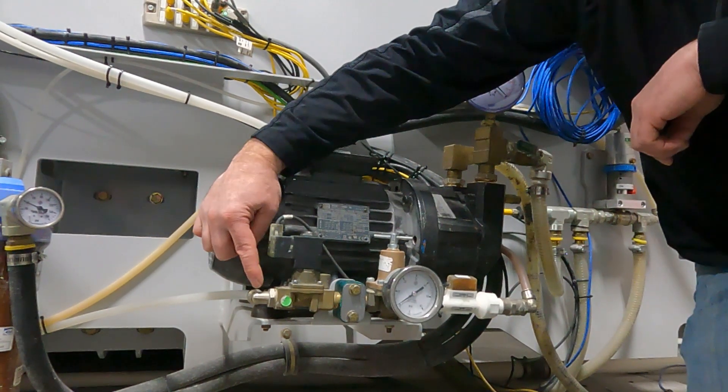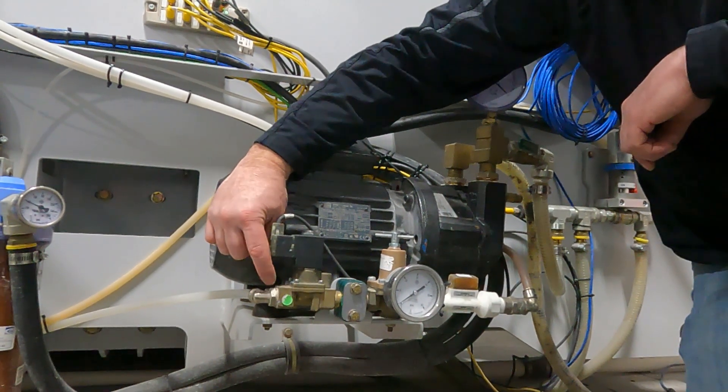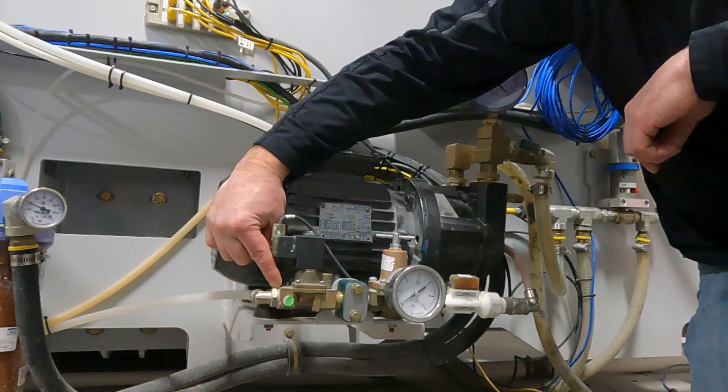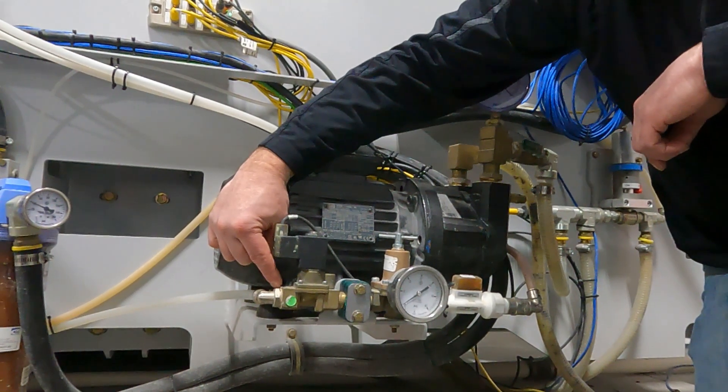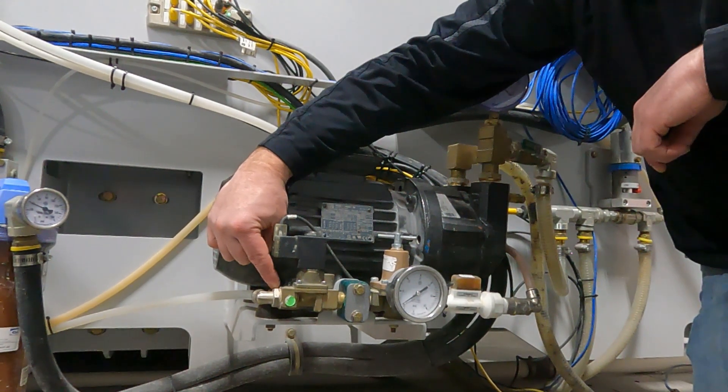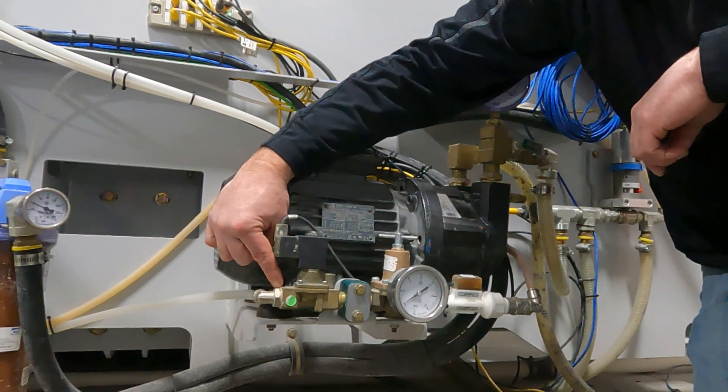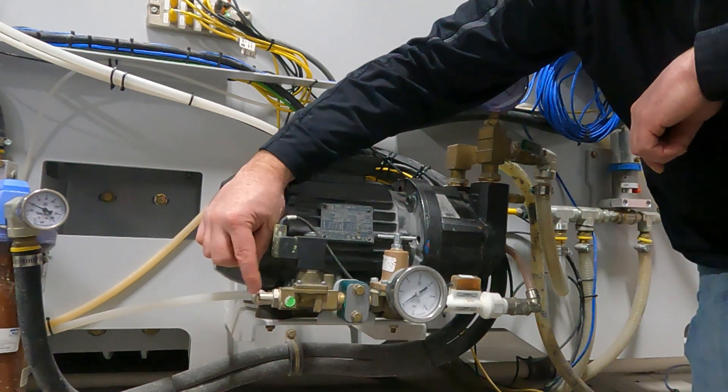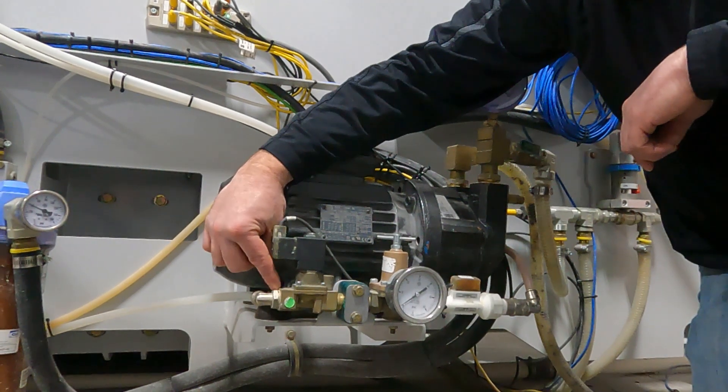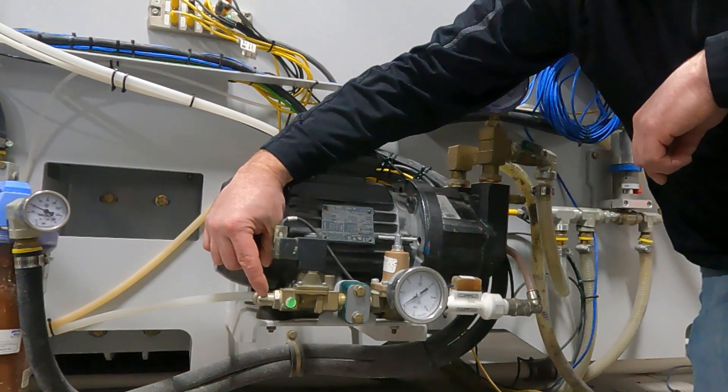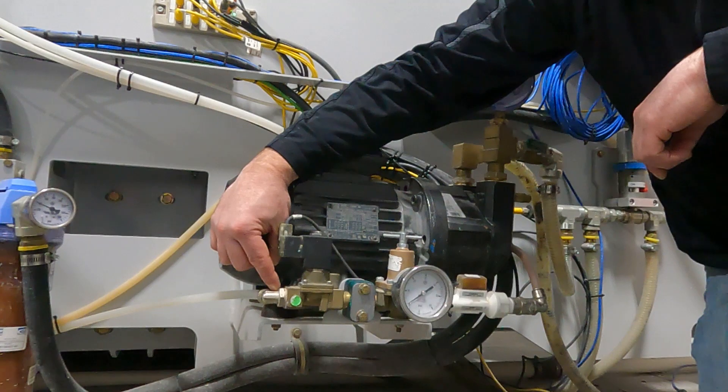Another thing to check is to remove this fitting. And behind there is a screen, an optional screen. You can remove that screen. Park does not require that screen to be in there because of the other filtration going through. So you can remove that or clean if you find that that screen is clogged.